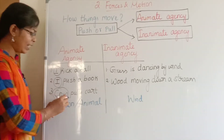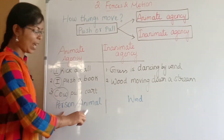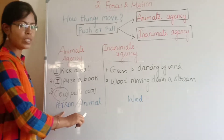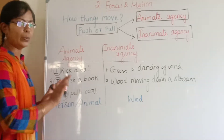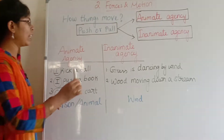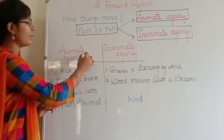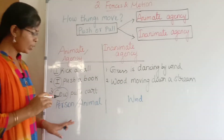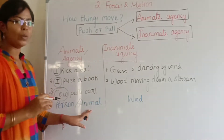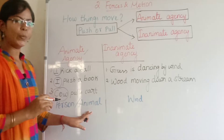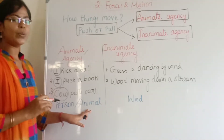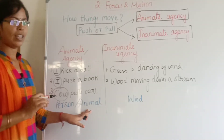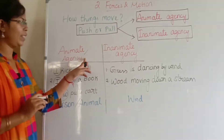Now let's see how things move. If a person or an animal does a push or pull, then it comes under animate agency. The person or animal are living things, and we call this animate agency.